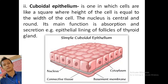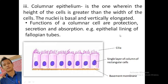Simple cuboidal epithelium has cells where the height equals the width, with a central round nucleus. Its functions include secretion and absorption. An example is the epithelium lining the follicles of the thyroid gland — you can see the nucleus, connecting tissue, base membrane, and cytoplasm. In columnar epithelium, the cells are taller than they are wide with basally located nuclei. Functions include secretion and absorption. An example is the epithelium lining of the intestine.